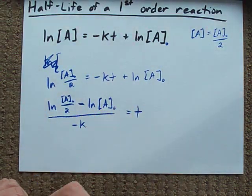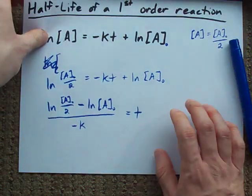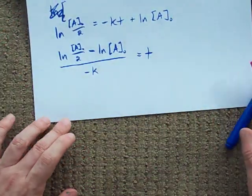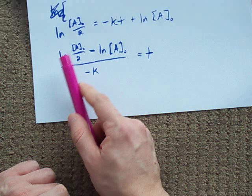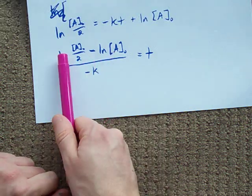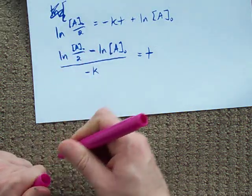So this is the expression for half-life of a first-order reaction. Now, I'm a bit of a math nerd, so I'm going to rearrange this a little bit. When you have the difference of two lns,